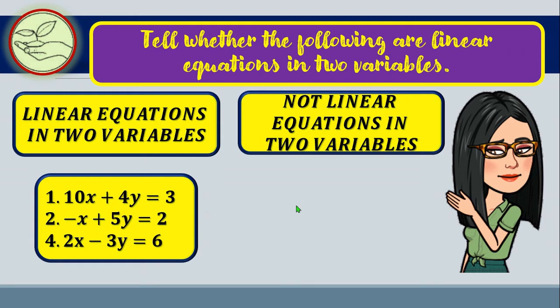Let us examine. The variables x and y appear in numbers 1, 2, and 4, and their exponents are equal to 1. If you do not see an exponent on a variable, automatically the exponent is 1. The values of a, b, and c are real numbers and a and b are not equal to 0. For number 1: a equals 10, b equals 4, c equals 3. For number 2: a equals negative 1, b equals 5, c equals 2. For number 4: a equals 2, b equals negative 3, c equals 6.